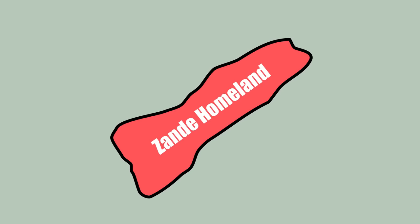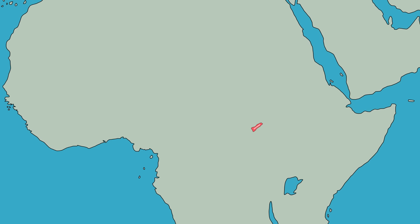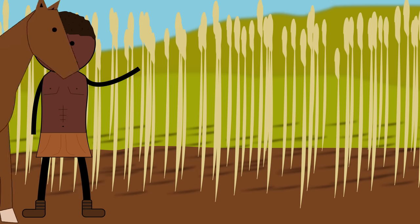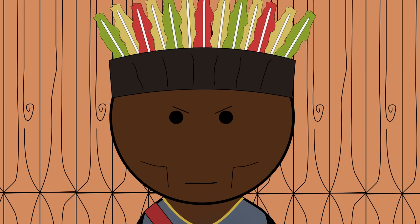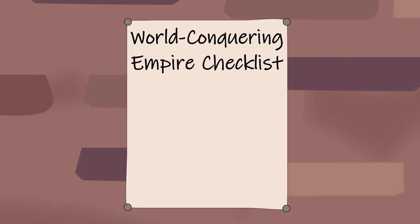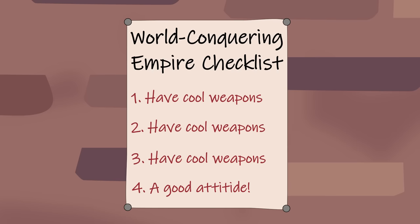In the 1700s, there were these people called the Zandi who lived in the modern-day Central African Republic. For most of their history, they'd been happy to just farm and herd livestock or whatever, but then this Avangara clan took over and decided that aggressive military expansion was way cooler. Now, obviously, in order to be a world-conquering empire, you need to have some serious hardware behind you.